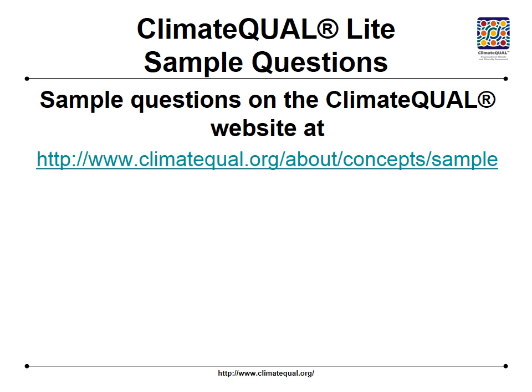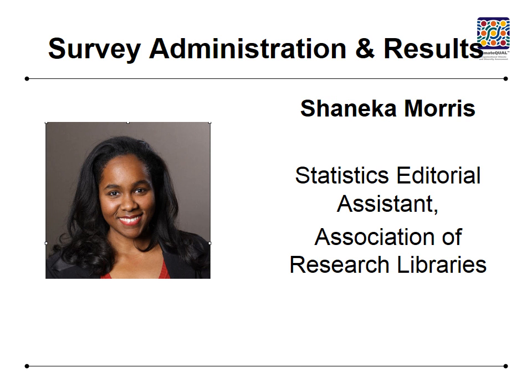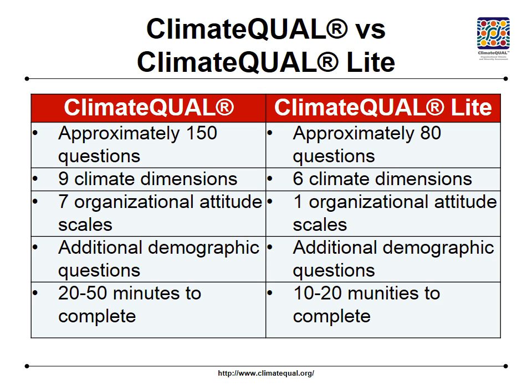That will be really great to have that in our publications database on the website. This slide summarizes the difference between the long form and the light form of ClimateQual. The take-home message is that ClimateQual Light contains approximately 50% fewer questions. Our data show that the median response time is cut almost in half when you administer ClimateQual Light, without compromising the integrity of the data you receive.